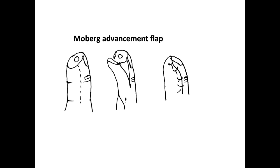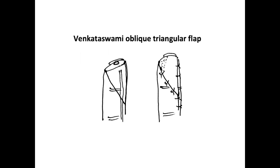The Moberg advancement flap is a type of advancement flap used for thumb tip defects. It gives good sensate skin on the tip of the thumb but has a small disadvantage in that there will be a minimal flexion deformity at the interphalangeal joint of the thumb. The Venkataswami flap is also a type of VY advancement flap indicated for oblique defects on the fingertip, based on the neurovascular bundle on one side and advanced to cover the defect.